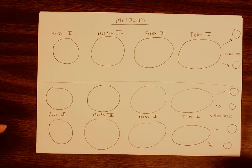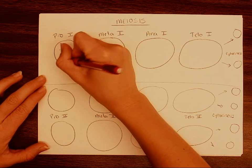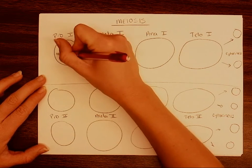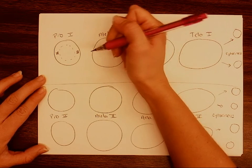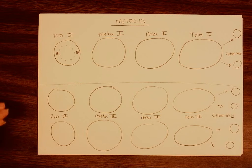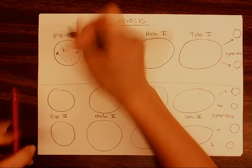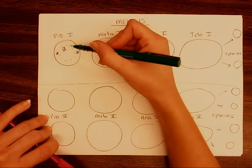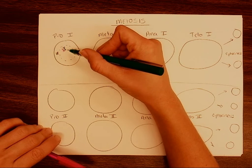Let's take a look at prophase I. A couple of things that are going to be happening: the nucleus is going to be breaking down, and we're going to see these centrioles located next to the nucleus, ready to make the spindle fibers to separate our chromosomes. Something really cool happens in prophase I — homologous chromosomes are going to pair up next to each other. Homologous chromosomes are similar in size and shape, and we get one from mom and one from dad.